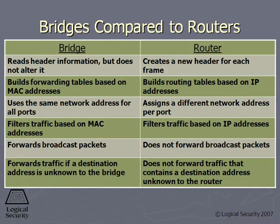When a packet comes to the router, the router is going to actually change the IP address for the next router — the next hop that it needs to go to. Bridges can do filtering on MAC addresses because that's all it knows. Routers do filtering on IP addresses.